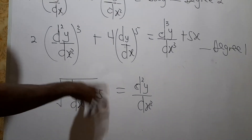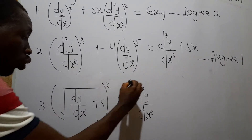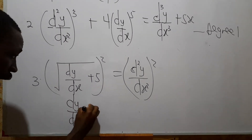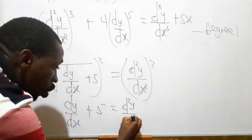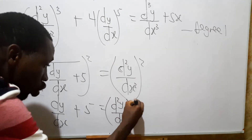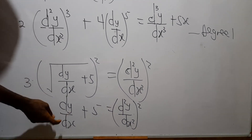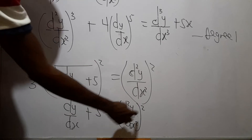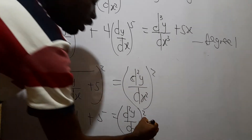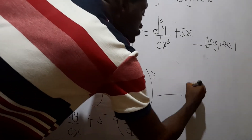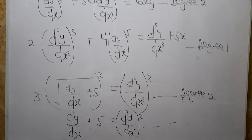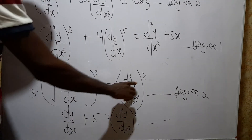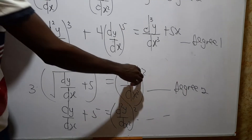For this equation, before determining the degree, you need to remove the square root. Square both sides of the equation, so the square root goes away. We get: (dy/dx + 5) = (d²y/dx²)². Now this derivative is of order 1 and this is of order 2, so the highest order is 2. The degree of the highest order derivative is 2, so this differential equation is of degree 2. Remove the square root first before determining the degree — the degree is not 1 while written under a square root.